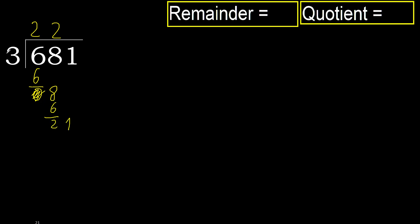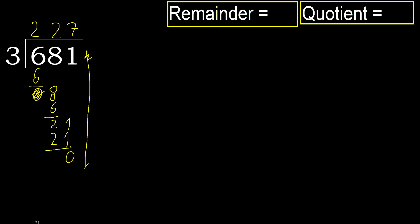21. 3 multiplied by 8 is 24, which is greater. Multiplied by 7 gives 21. Subtract. Next — there is no number remaining, therefore finish it.